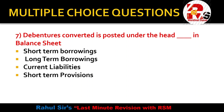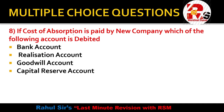Next: Debentures converted are posted under which head in the balance sheet? For example, if 10% debentures are converted to 15% debentures, those 15% debentures will be written under the heading of long term borrowings. So debentures are recorded under long term borrowings.